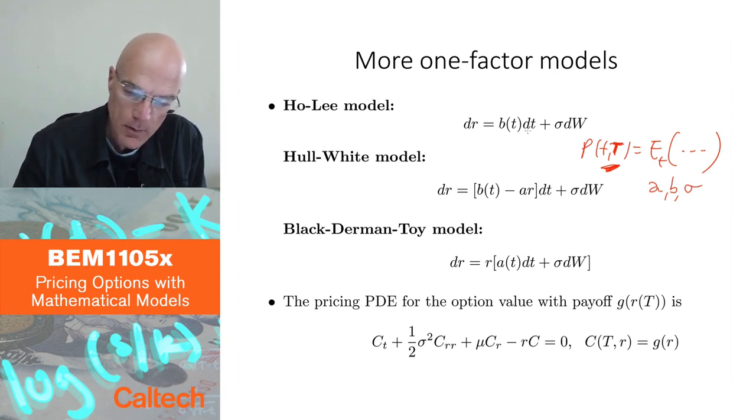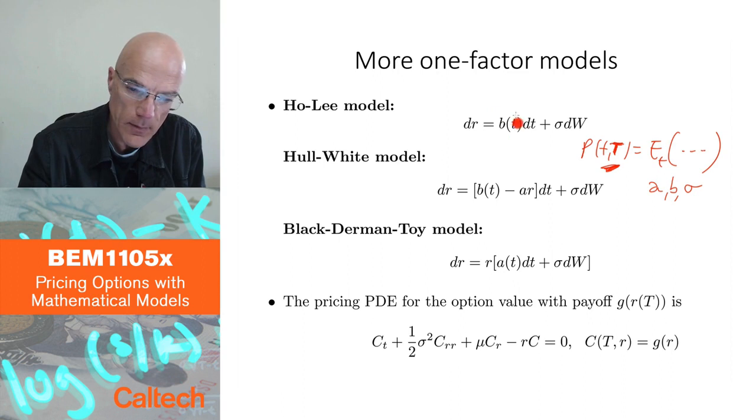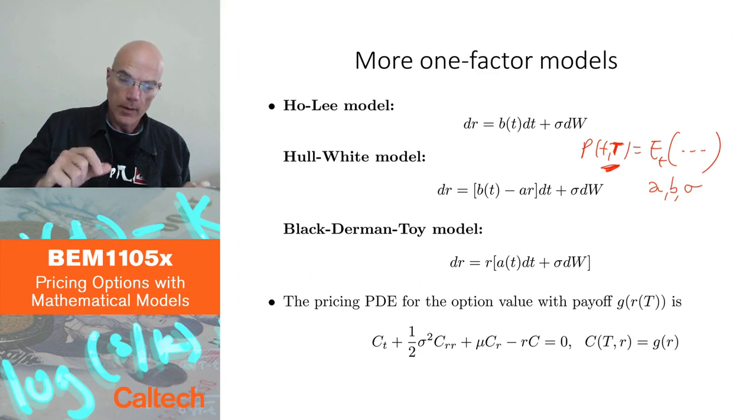Now, in the Ho-Lee model, you suddenly have infinitely many parameters. For every t, you have a different number here. So b(t) is really a function of t, which means like continuously many parameters that you can, and if you imagine that you have infinitely many bonds, infinitely many maturities,